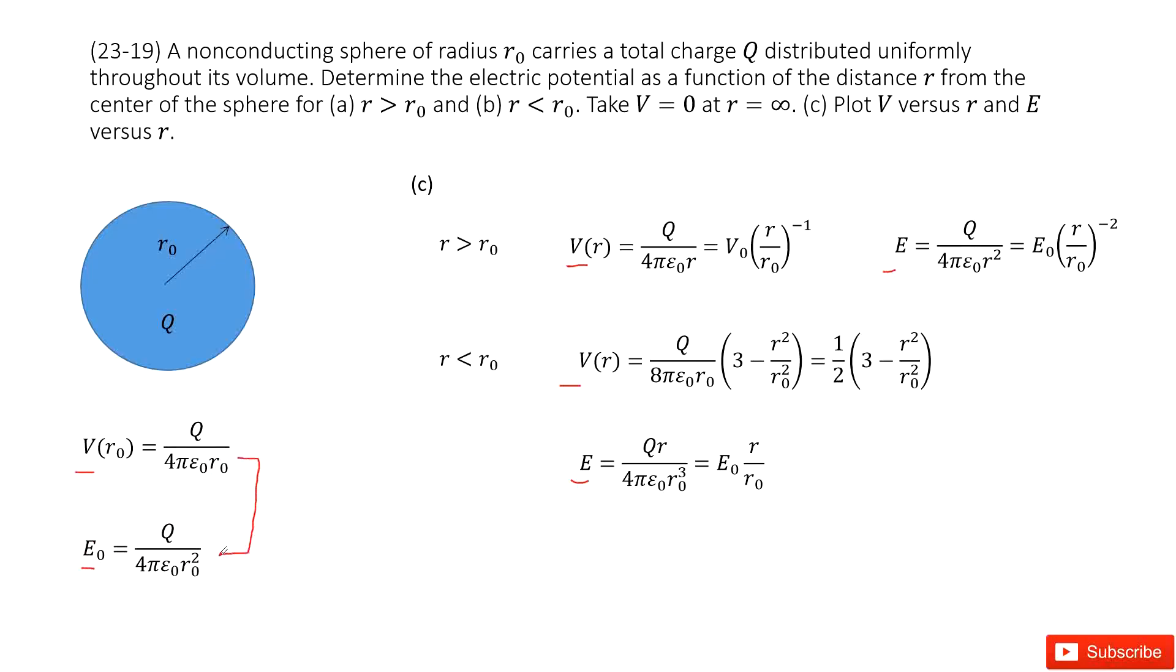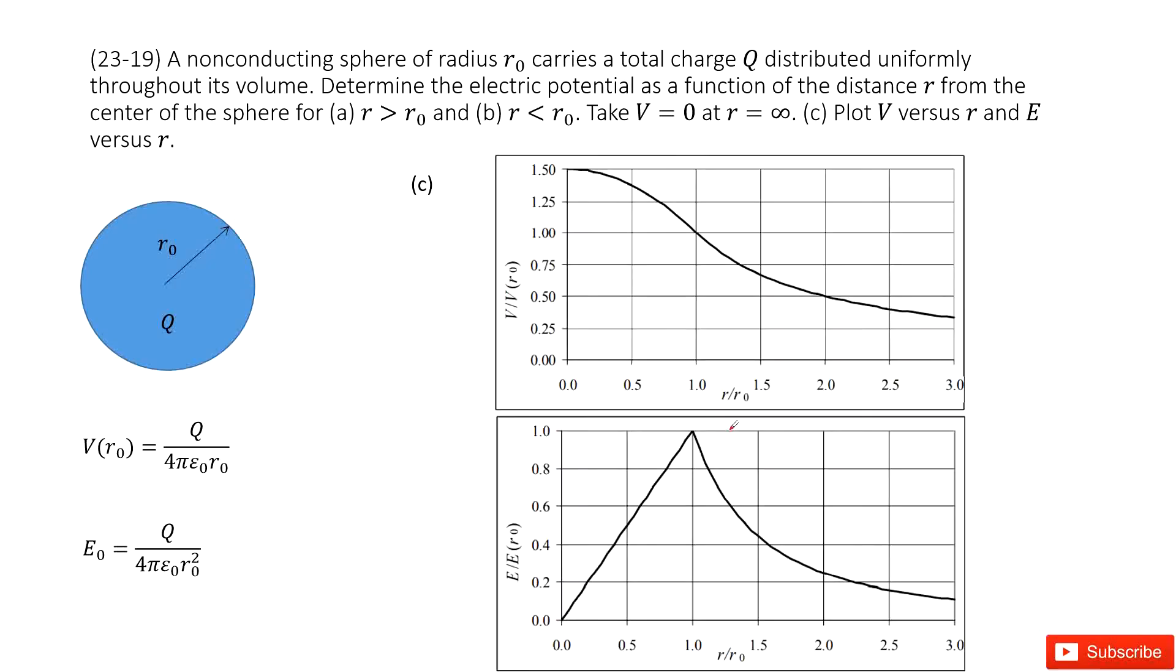If we introduce the terms E0 and V0 inside—V0 and E0 are two constants. In this case, you can replace some terms as V0, some terms as E0. And then draw function as V over V(r0), E over E(r0), and it looks like this one. Thank you.